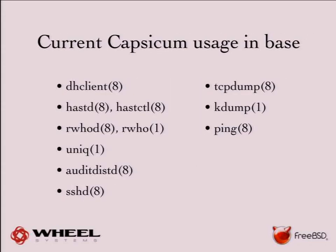Current Capsicum usage in FreeBSD base includes: dhclient, hostd, hostctl, rwhod, rsh (sandboxed by Mariusz during Google Summer of Code), uniq, auditd, sshd, tcpdump, kdump, and ping. More work is ongoing and any patches to sandbox additional tools are welcome.